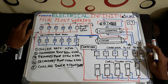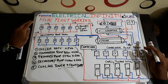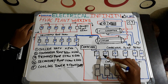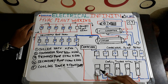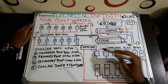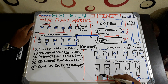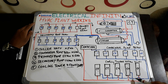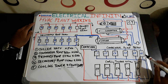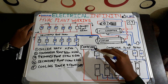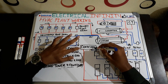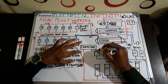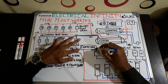Now let's begin the explanation of this HVAC plant. Here you can see we have a condenser, condenser pump, and a cooling tower. The red line means hot water and blue lines mean cool water. The cool water from the cooling tower is pumped into the condenser with the help of the condenser pump. Cool water from all the cooling towers enters the condenser pump and is pumped to the condenser. Then heat exchange takes place between the cool water and the condenser refrigerant.